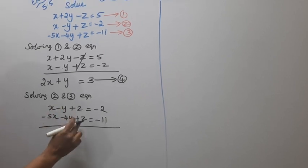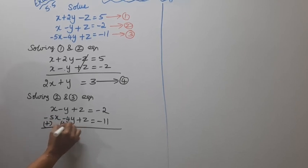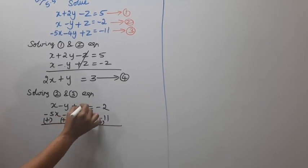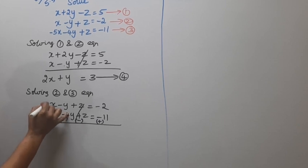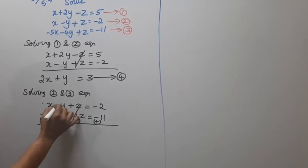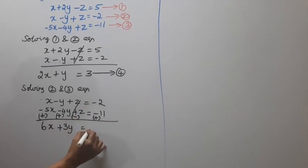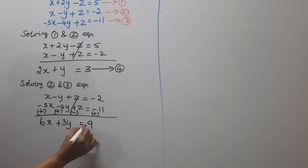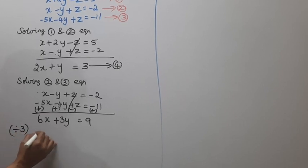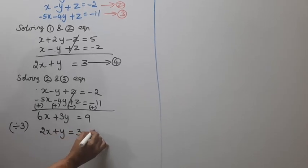We change the sign to eliminate z. After cancellation: 5x plus 1x gives 6x, and 4y minus 1y gives 3y, equal to 11 minus 2 which is 9. So 6x plus 3y equals 9. Dividing by 3: 2x plus y equals 3. This is the fifth equation.